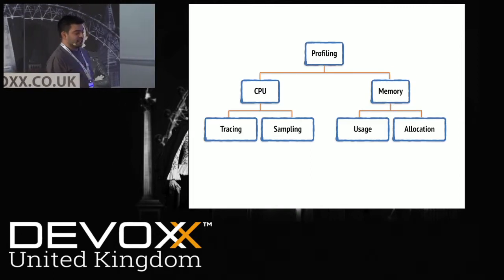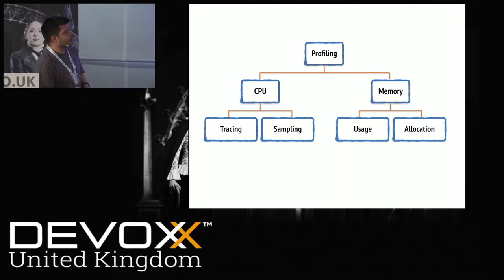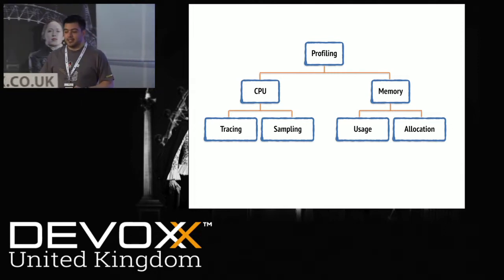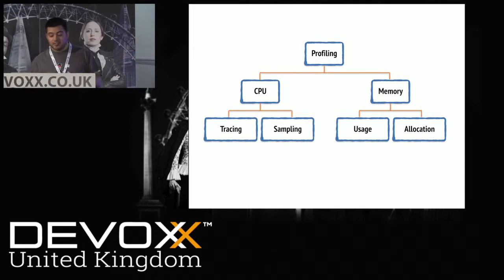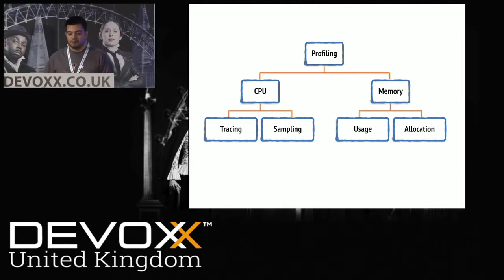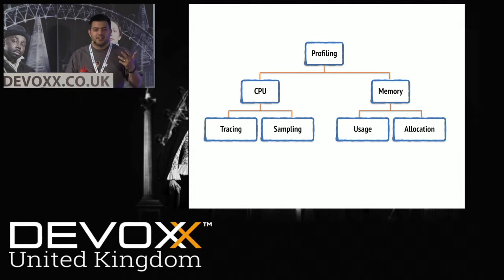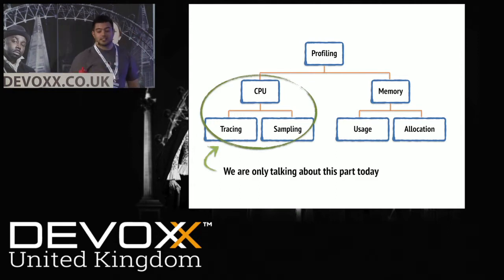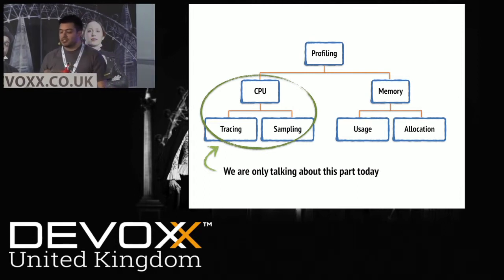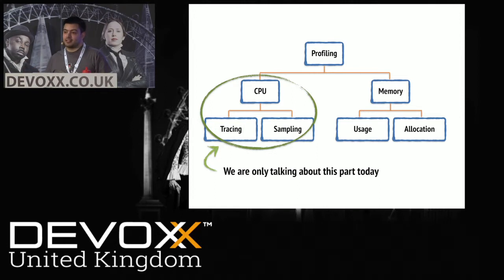When we talk about profiling, there are two different things we can profile: CPU profiling — optimizing your latencies — and memory profiling, which is about memory usage. They're two totally different topics and sessions. We're only focusing on CPU profiling, specifically tracing and sampling. High level: tracing is where you follow your method invocations of a request, effectively following the flow. Sampling is simply about aggregating stats of a snapshot.